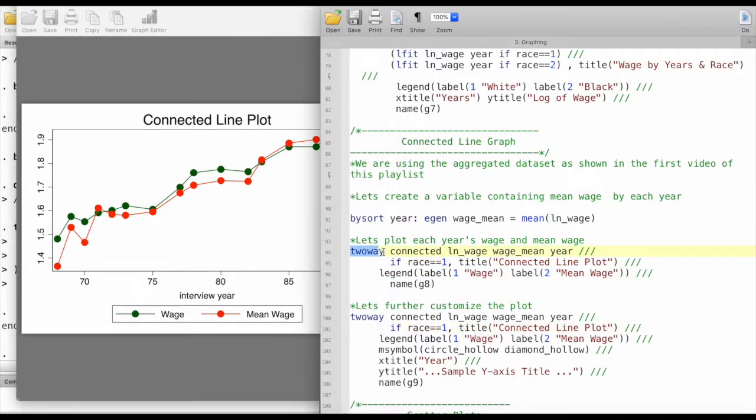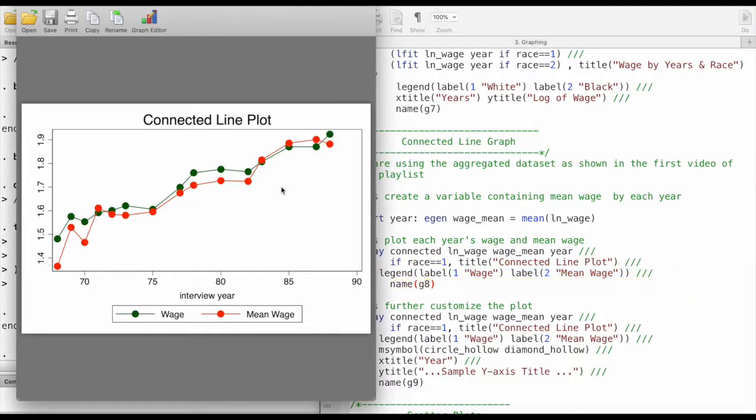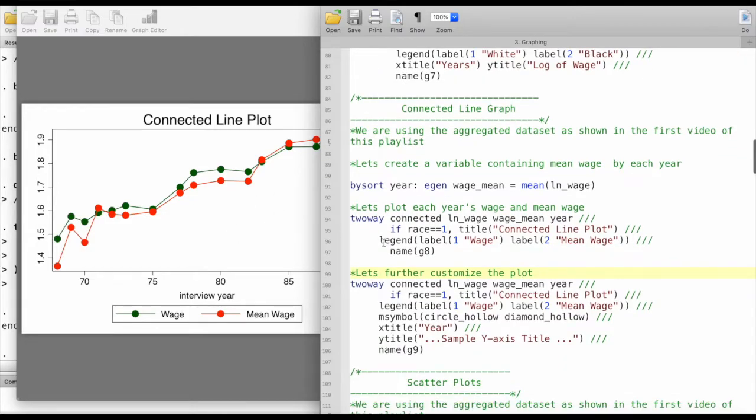We are using twoway, and to create a connected line graph we use the command connected followed by the variable names. These two variables come on the y-axis and this is our x-axis variable here. We've drawn it for only one race, so race equals one here. We can customize the title and labels, and we can give a graph name which is d8 in STATA's memory.